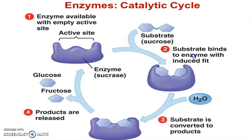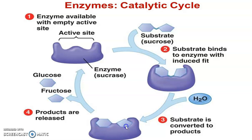As seen in the animation, the active site binds specifically to a matching substrate — in this instance, sucrose. We're looking at a hydrolysis reaction where the enzyme changes shape and breaks that bond into glucose and fructose. Water is used to stabilize the two products, which are then released. The enzyme returns to its original shape and performs the reaction again.